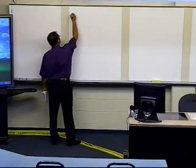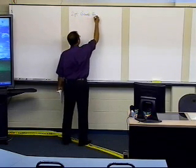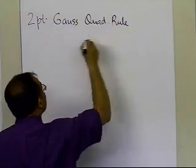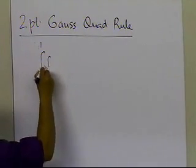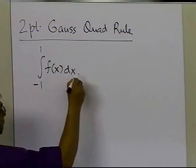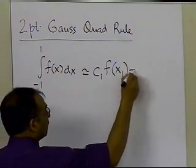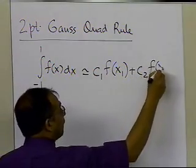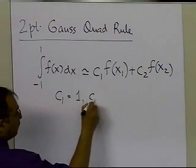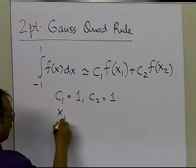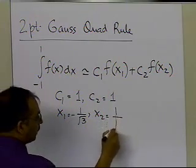In this segment, we're going to derive the two-point Gauss Quadrature rule. What we want to derive is that if somebody gives us the integral going from minus 1 to plus 1, approximated as c1 times f(x1) plus c2 times f(x2), we want to show that c1 equals 1, c2 equals 1, x1 equals minus 1 over square root of 3, and x2 equals 1 over square root of 3.